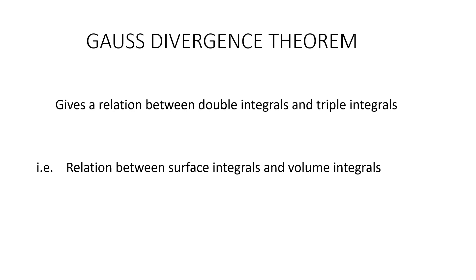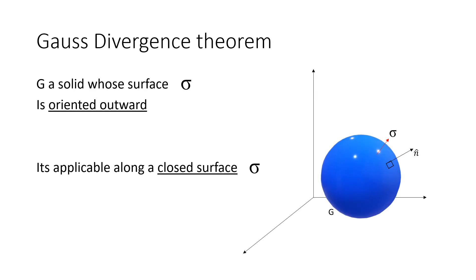The Gauss Divergence theorem gives the relation between double integrals and triple integrals — that is, the relation between surface integrals and volume integrals. In Gauss Divergence theorem, a solid shape will be given, which we take as G, and the surface is taken as sigma. This solid always has an outward orientation. We apply Gauss Divergence theorem when the surface is a closed surface.